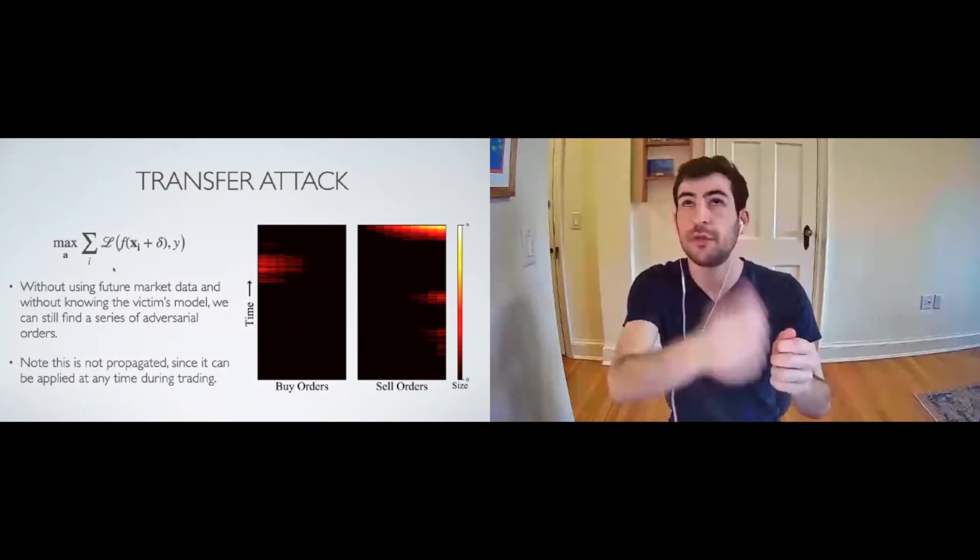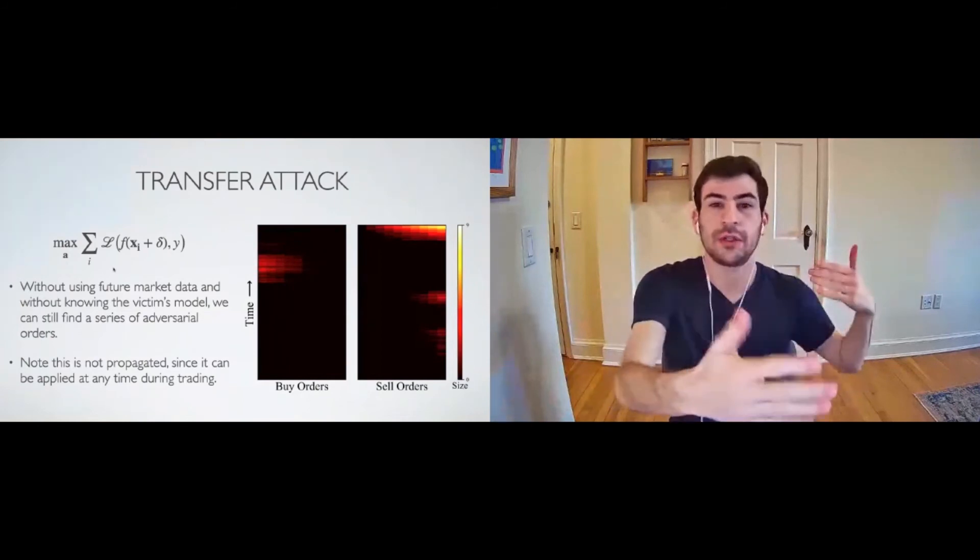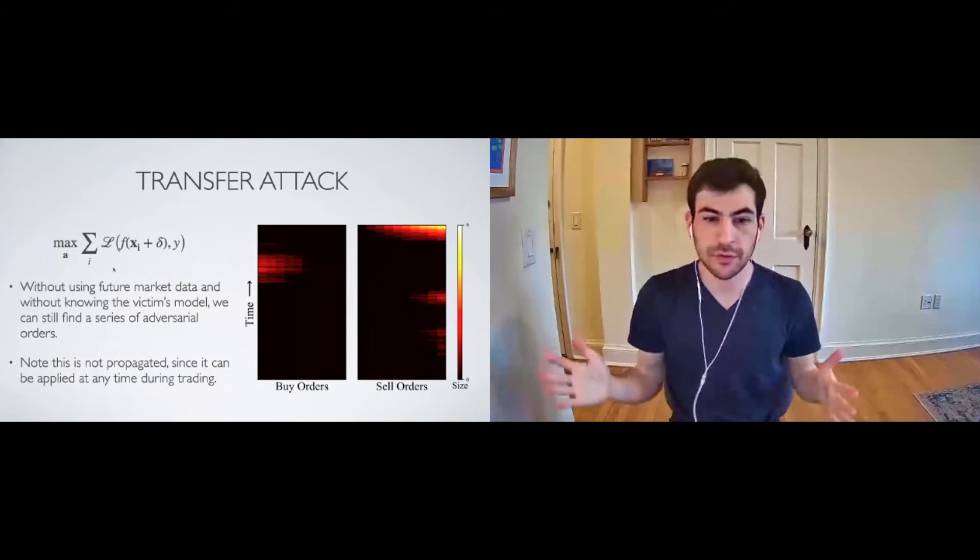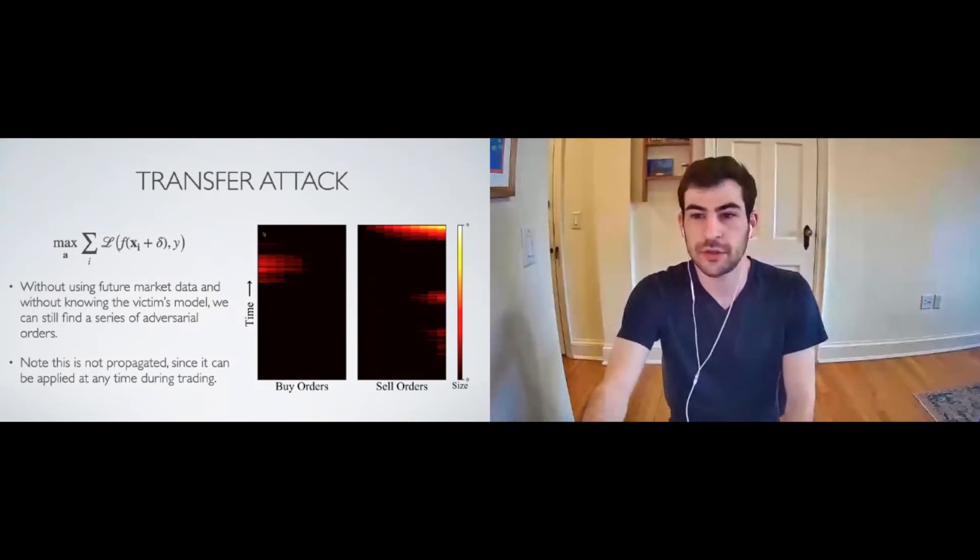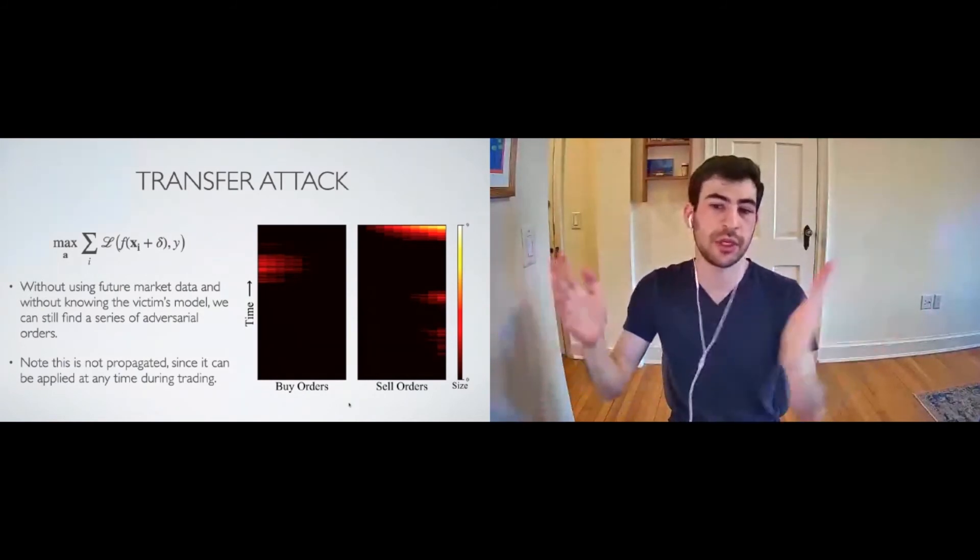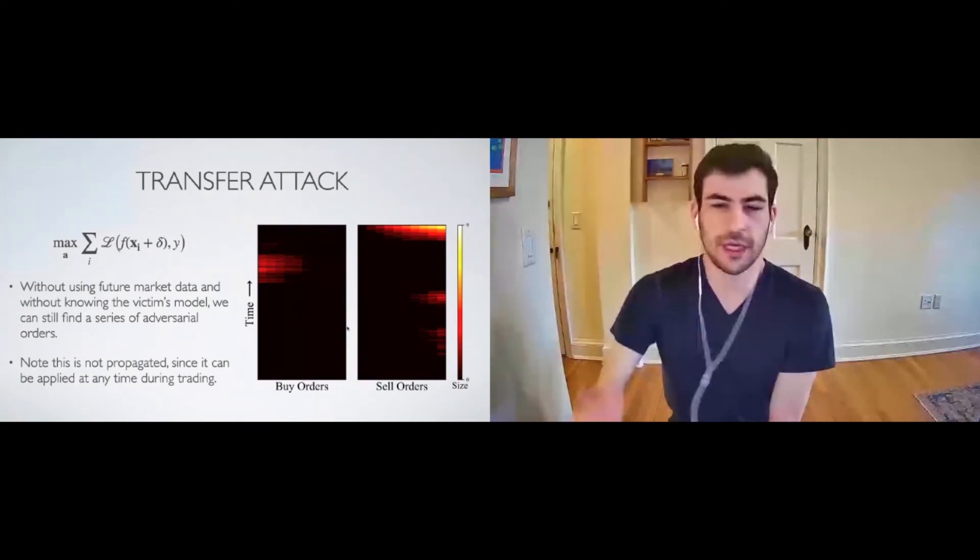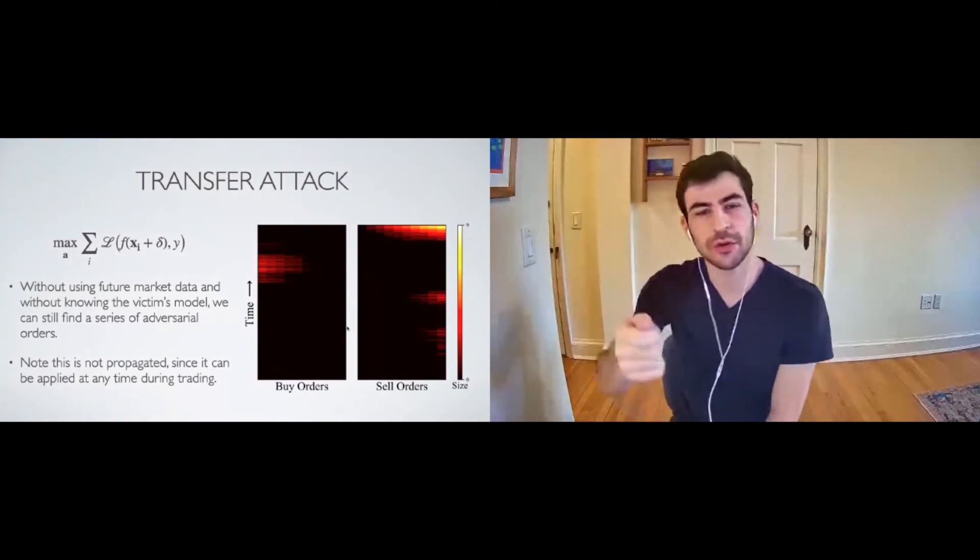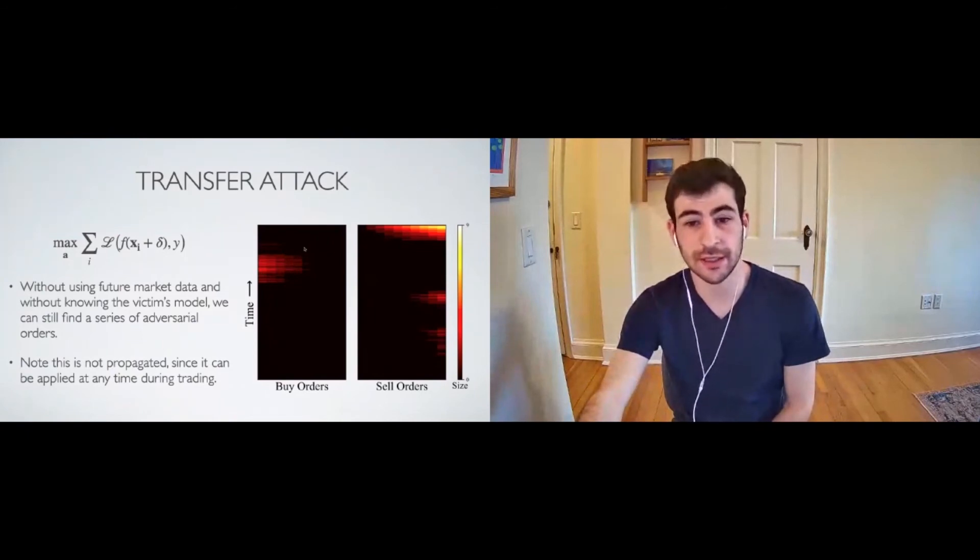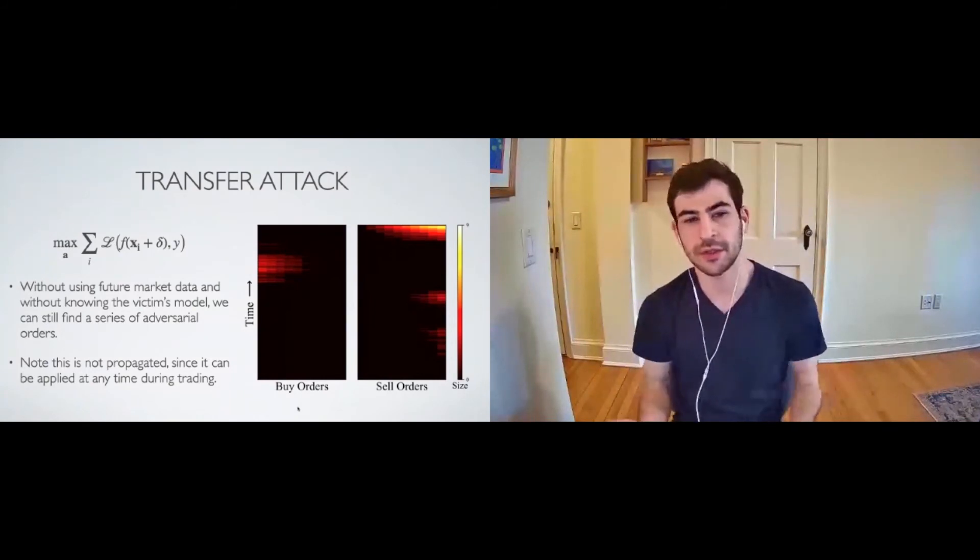And without using future market data, without knowing the victim's model, we can still find this series of orders. So this, again, note this is unpropagated because the propagation is a function of the actual order book, and this is meant to be used on many different snapshots. So we didn't pick one and we didn't propagate it. But this is a set of orders that you could go, and if memory serves, this was computed with Ford stock data. So you could go place some orders for Ford at particular price levels. And again, these are done at price levels. It's agnostic of what the dollar amount is at this best buy and best sell order. And you could start at time zero and start placing the orders here and place them here, place them here. And you will actually hurt the valuation models that someone else is using without knowing the architecture.